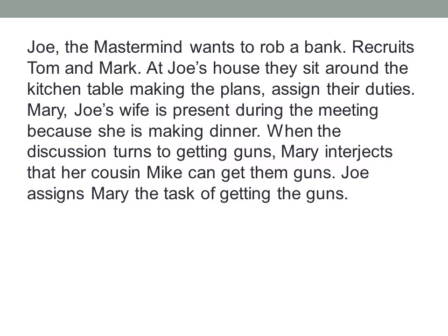We have Joe, the mastermind. He wants to rob a bank and recruits Tom and Mark. At Joe's house they sit around the kitchen table making plans and assigning tasks. Mary, Joe's wife, is present during the meeting because she's making dinner. When the discussion turns to getting guns, Mary interjects that her cousin Mike can get them guns, and Joe assigns Mary the task.